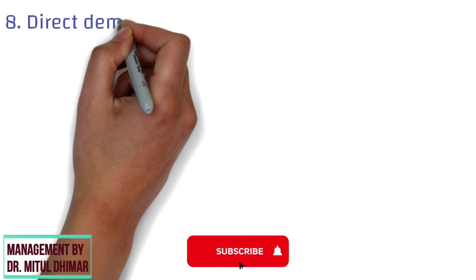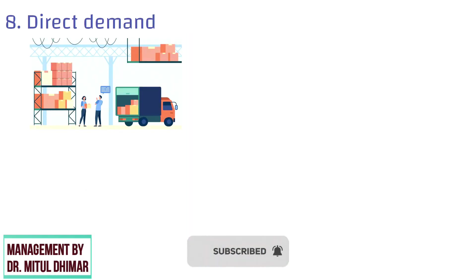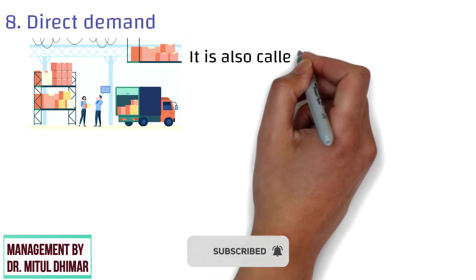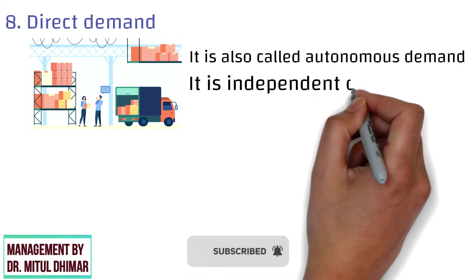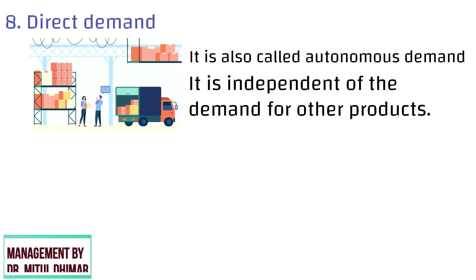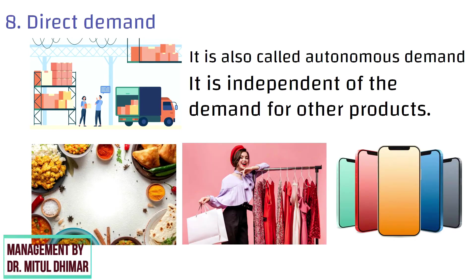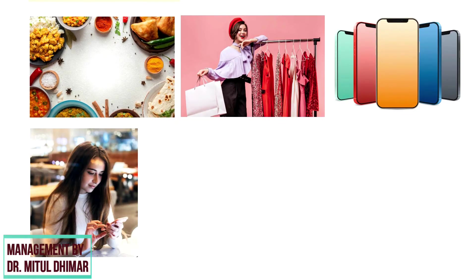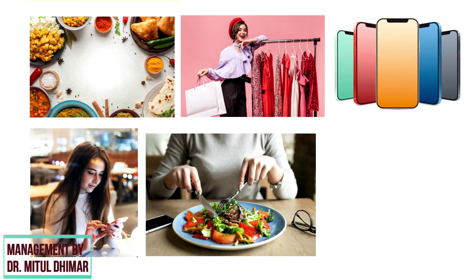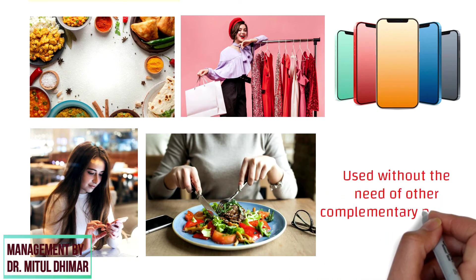Number 8: Direct Demand. Direct Demand is a demand for a final good. It is also called autonomous demand, as it is independent of the demand for other products. Food, clothing, and cell phones are examples of these, as these products are used individually and are directly consumed or used without the need for any complementary product.